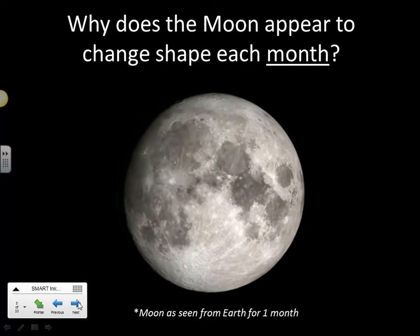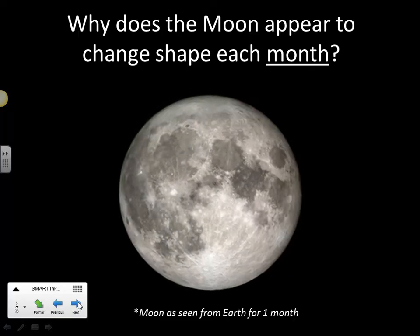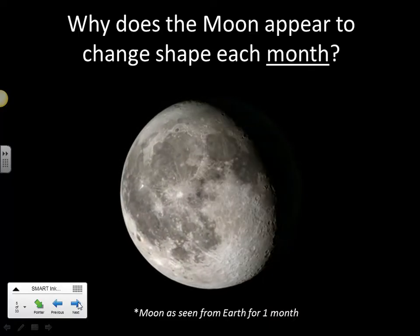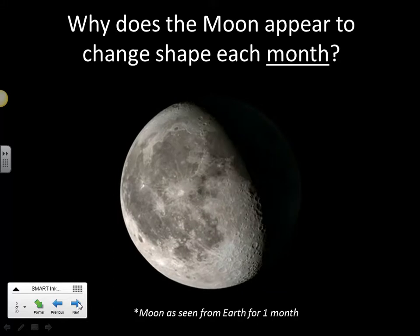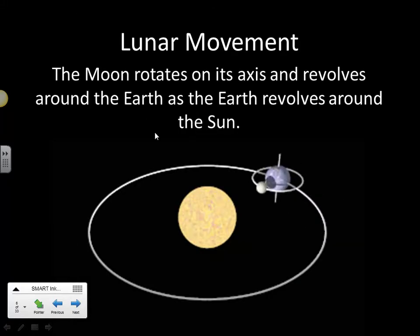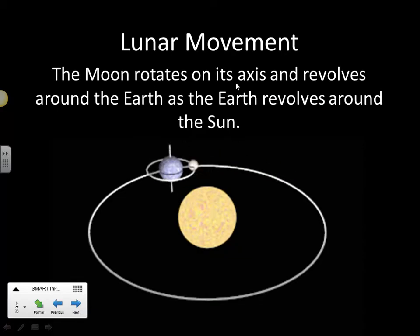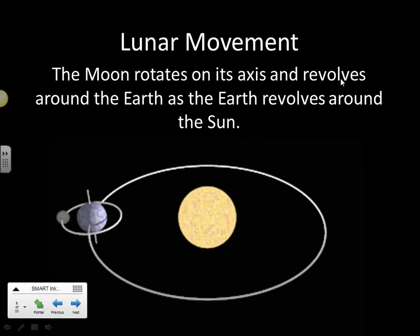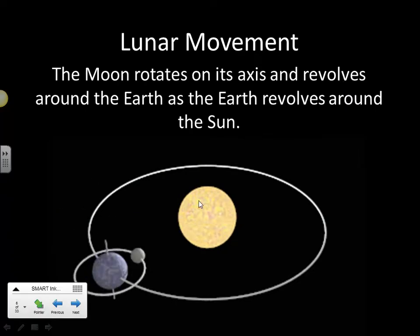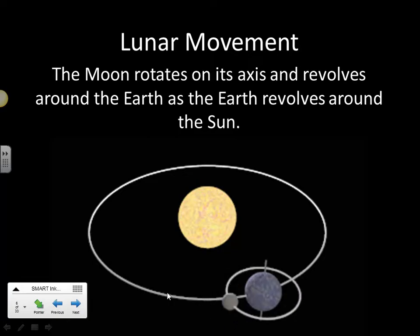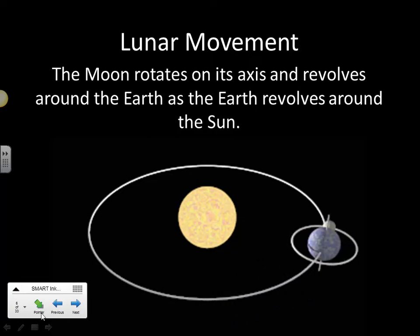I'm going to go into depth of why the moon appears to change shape over the course of a month. The moon is rotating on its axis as it is orbiting around the Earth, and this motion causes phenomena to occur on Earth, including the phases of the moon.